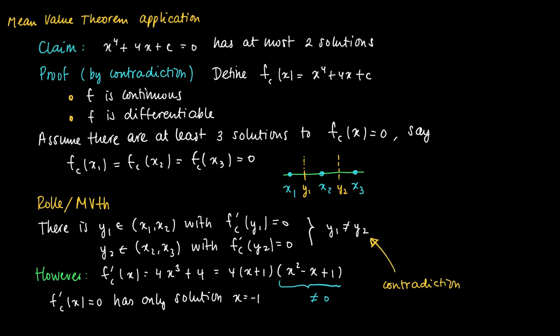The contradiction lies in the fact that we assumed at least three solutions. As soon as we arrive at the contradiction, this assumption cannot be true, and we have shown that there are at most two solutions.